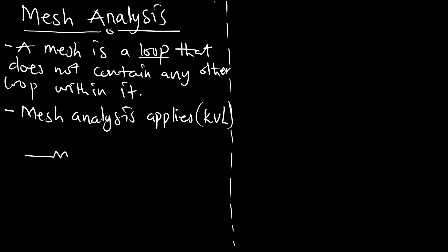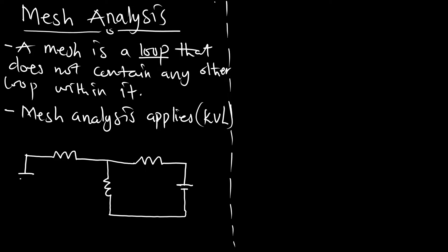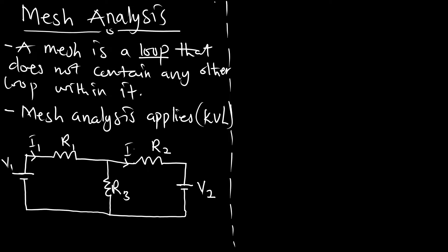Let's get a diagram and make some analysis as to how we go about the mesh analysis. I have my resistors, and let's call this a voltage source. I also have another voltage source. I'll call this resistor R1, this R2, this V2 as voltage 2, this V1, and I'll call this R3. The current moving through this we'll call I1, this one I2, and this one I3.